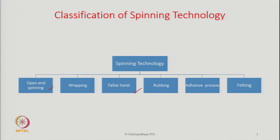Then there is a process which is the adhesive process. In this process, we will be binding the fibers with the help of adhesive. And then the last one is felting technology — a felting process through which the fibers will get stuck to each other. So these are the various means which are used to produce yarns and the set of technologies that exist. We call them new spinning technologies.